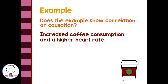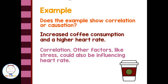Does this example show correlation or causation? Increased coffee consumption and a higher heart rate. That's correlation, because other factors like stress could also be influencing heart rate. It's not really a cause-and-effect situation — other things could be affecting both variables.